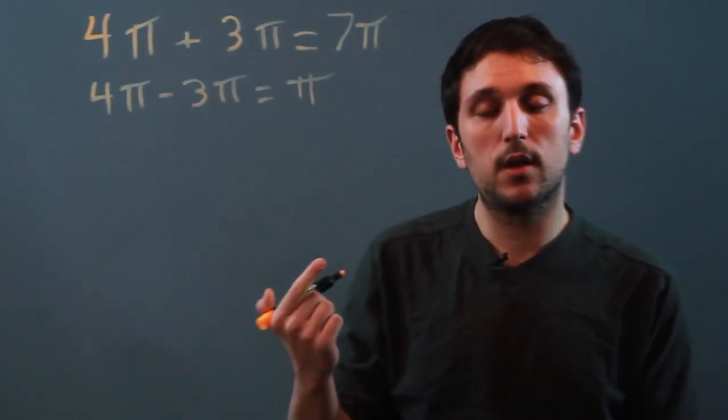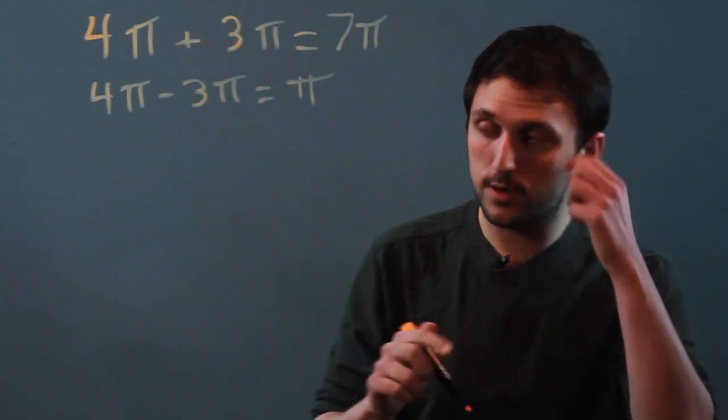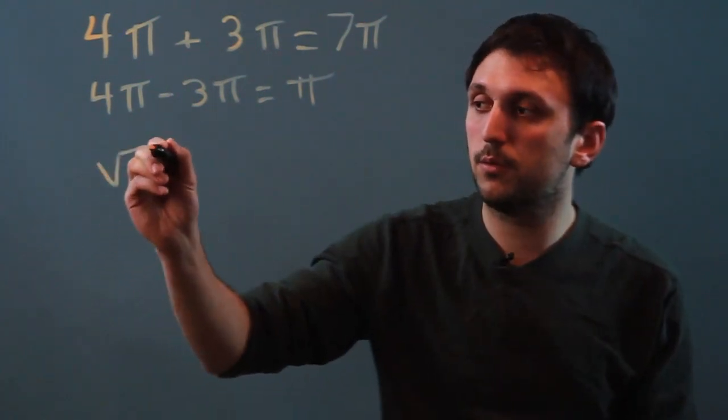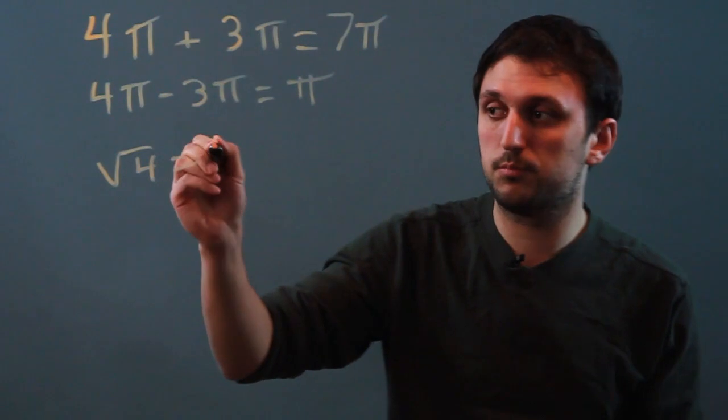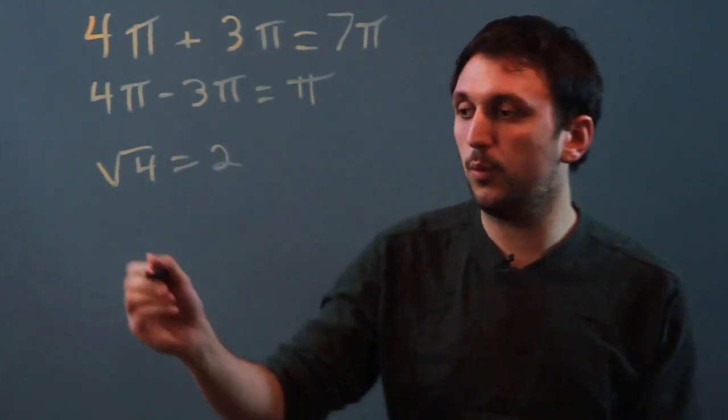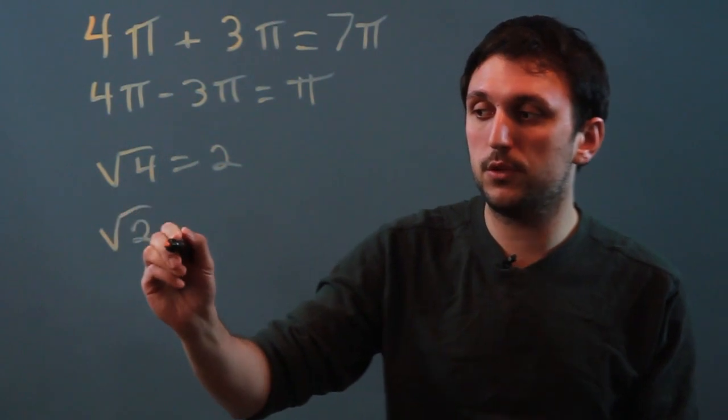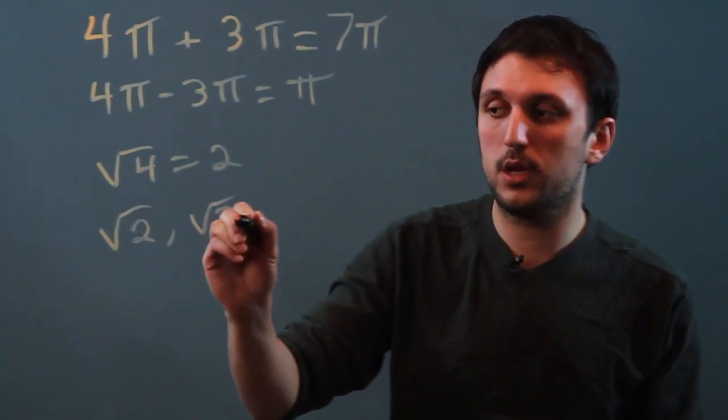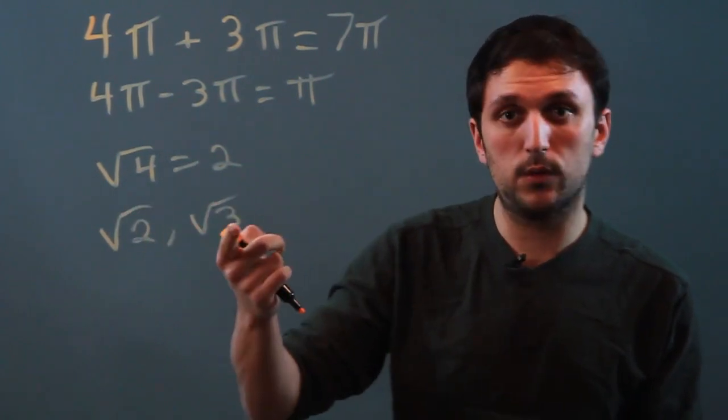Now, with square roots, the same thing holds true, but not all square roots. For example, the square root of 4 equals 2, so that's not irrational. An irrational square root would, say, be square root of 2 or square root of 3. These are good square roots that you can work with.